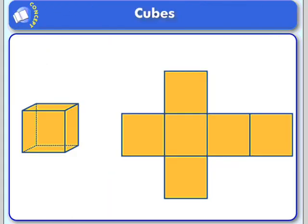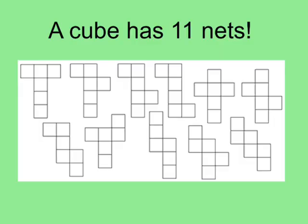Here's a net of a cube — a two-dimensional representation of a three-dimensional object. There are actually eleven different ways we could represent that cube. These eleven different nets would all, if folded back together, make up a cube.